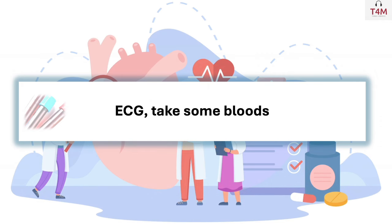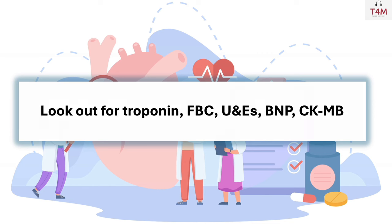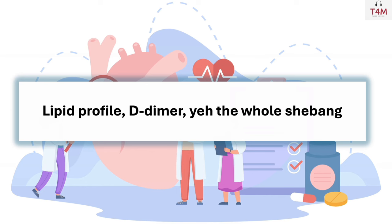For investigations, perform an ECG and take bloods. Look out for troponin, FBC, BMP, CKMB, lipid profile, and D-dimer — the whole shebang.